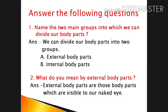Answer the following questions. First, name the two main groups into which we can divide our body parts. Answer: We can divide our body parts into two groups — First, External Body Parts, and Second, Internal Body Parts. Second, what do you mean by External Body Parts? Answer: External Body Parts are those body parts which are visible to our naked eyes.